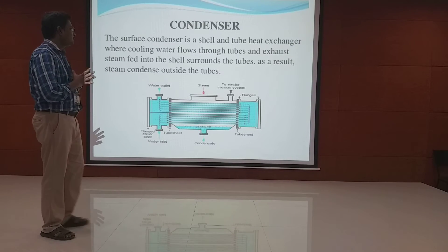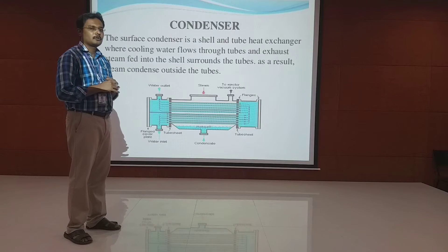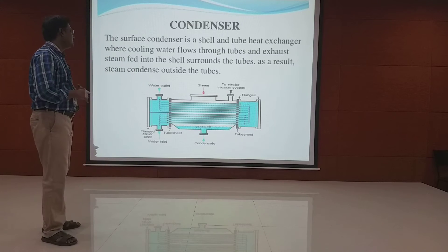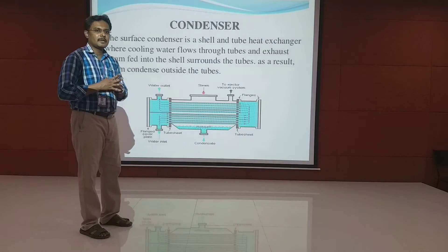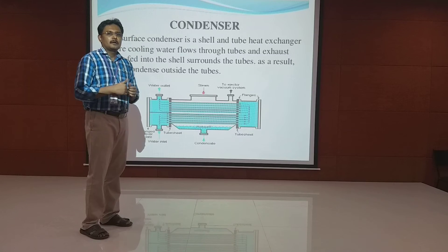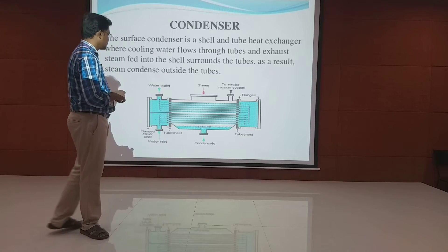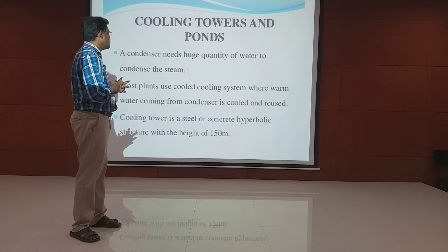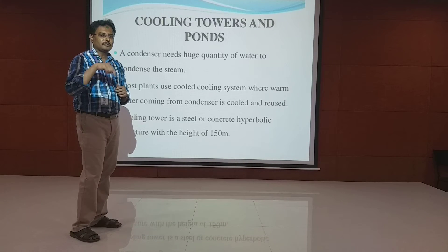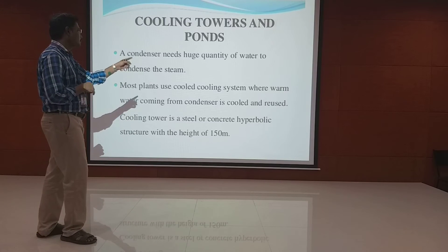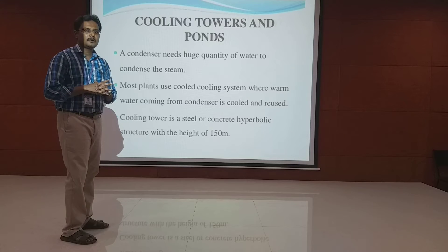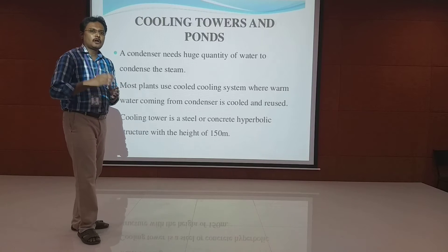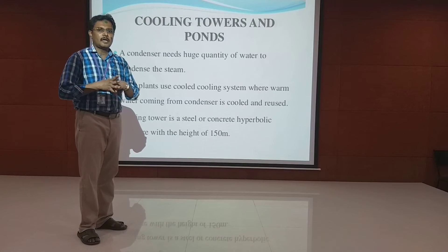A surface condenser is used as a heat exchanger, where cooling water flows through horizontal tubes placed inside the condenser, and exhaust steam fed to the shell surrounds the tubes. As a result, the steam condenses outside the tubes. The cooling tower aids the condenser, which needs a huge amount of water to condense the steam completely. Most plants use a closed cooling system where warm water from the condenser is cooled and reused. The cooling tower can be made of steel or concrete at a height of up to 150 meters.